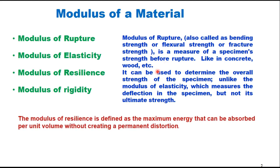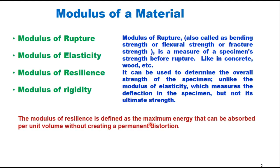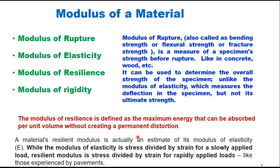The modulus of resilience is defined as the maximum energy that can be absorbed per unit volume without creating a permanent distortion in the specimen. A material's resilient modulus is actually an estimate of its modulus of elasticity. There is a difference between the modulus of elasticity and modulus of resilience: the modulus of elasticity is the stress divided by strain where a slow load is applied.